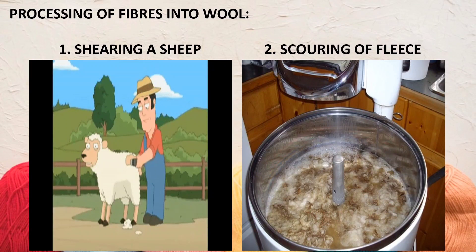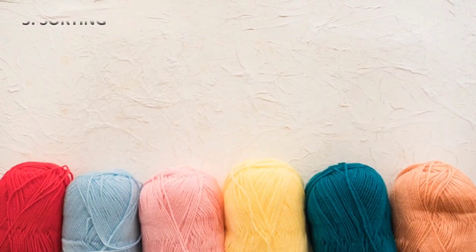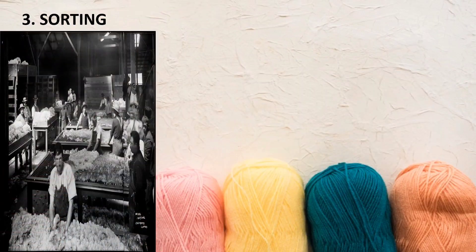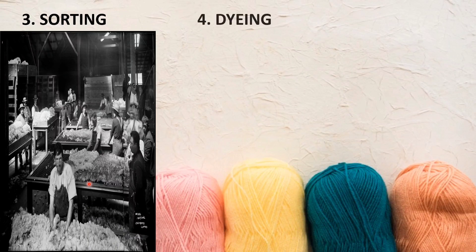The next step is sorting. Here, the fleece is separated according to quality into different batches. Different qualities of fleece are separated from one another. This step is called sorting.